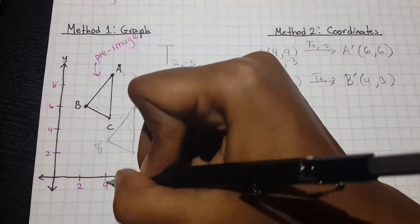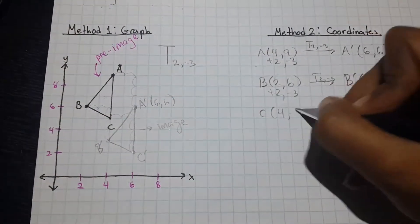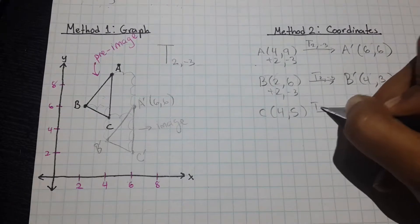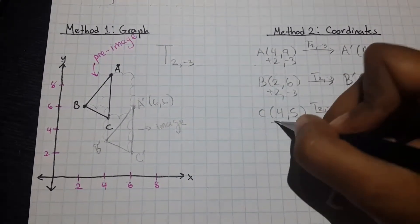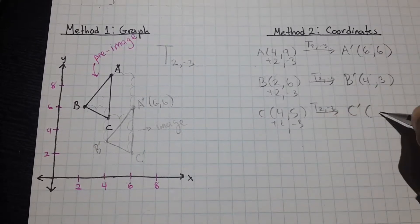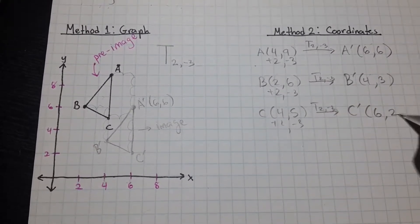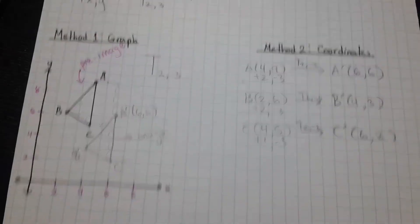Last but not least, we have C. C is (4,5). Performing the same translation. C prime is plus two, minus three. That's going to be (6,2). Six comma two. And that's exactly what we got.